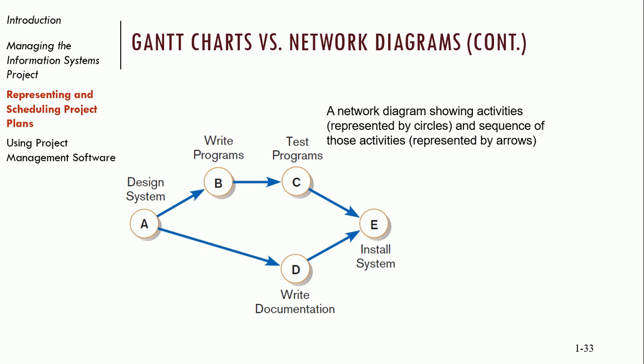Looking at the example on the screen: task A is the system design, task B is writing programs, and task D is writing documentation. Theoretically, B and D could both kick off at the same time. Testing the program cannot start until we've written the program — you can't really test anything until you've written something. So C is dependent on B, which is dependent on A: C cannot start until B completes, and B cannot start until A completes.